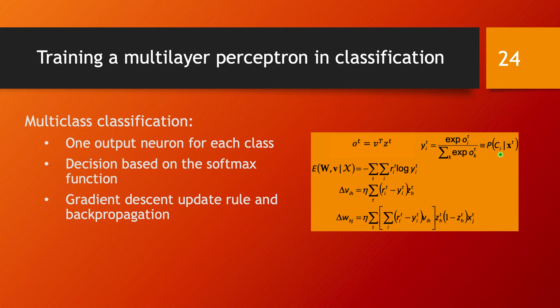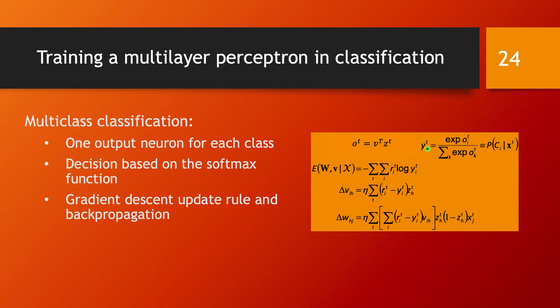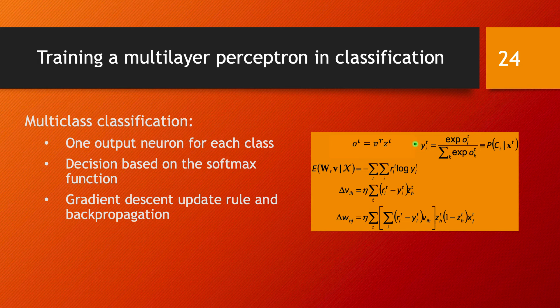That's going to reflect the probability that the data point x^t that we are currently analyzing comes from class Ci. And we have one such neuron for each one of our K classes. So one output neuron for each class, decision based on the softmax function.